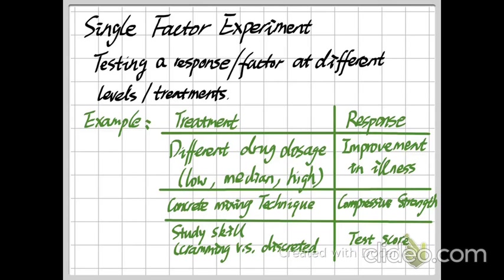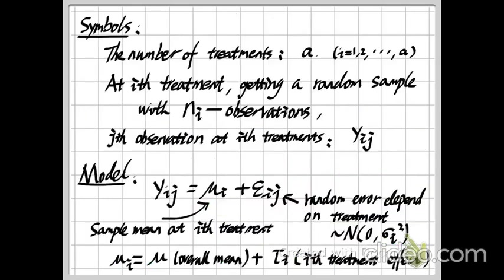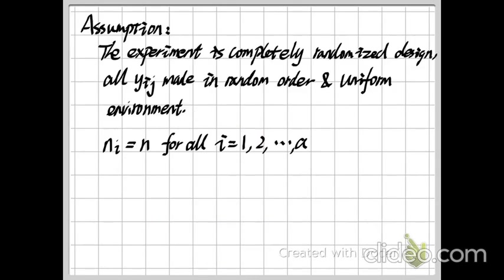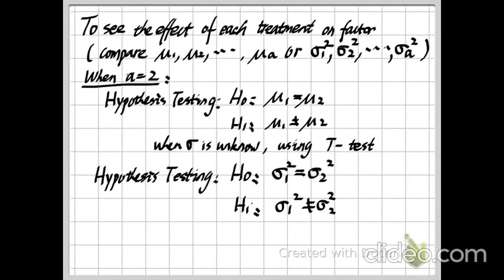In this lecture, we will continue to talk about checking the effect of each treatment. For example, we want to do a hypothesis test about mu1, mu2, until mua, where a is the number of treatments — three, in the drug dosage example. We already said we should do our F test.